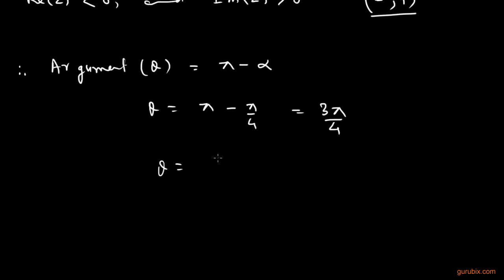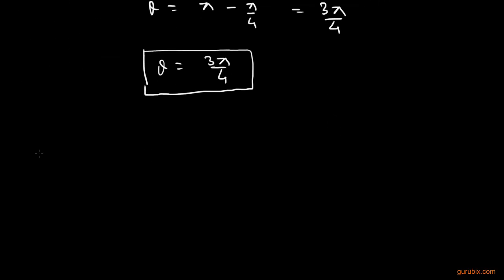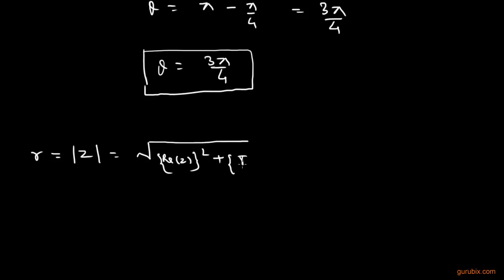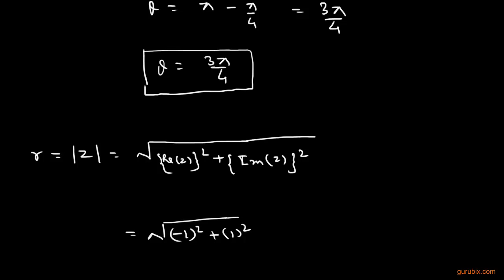Therefore the argument is equal to 3π by 4. Now we shall calculate the modulus, denoted by r, which equals the square root of the sum of the squares of the real part and the imaginary part of the given complex number. This means the square root of the sum of square of minus 1 and square of 1, which equals square root of 2.